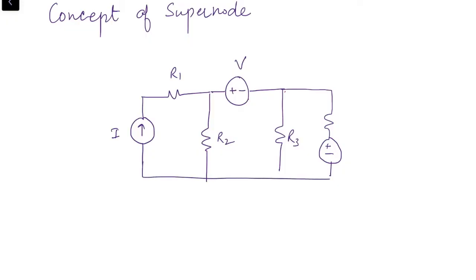As discussed earlier, the very first step in nodal analysis is to identify how many nodes there are where we can apply KCL effectively. Here we have three nodes: one, two, and a third which is the interconnection of the current source, resistance R2, R3, and the voltage source V2. Out of these three nodes, we assign one as the reference node.